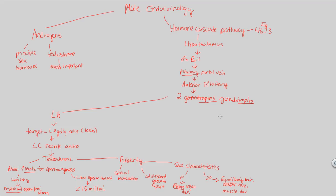The second gonadotropin is FSH, follicle-stimulating hormone. FSH is important in the development of the seminiferous tubules — where spermatogenesis occurs. FSH is released from the anterior pituitary toward the testes, specifically targeting the seminiferous tubules. FSH stimulates not Leydig cells but Sertoli cells, named after Enrico Sertoli, an Italian physiologist who discovered them in 1865.